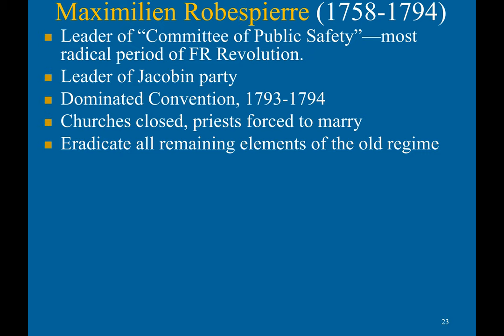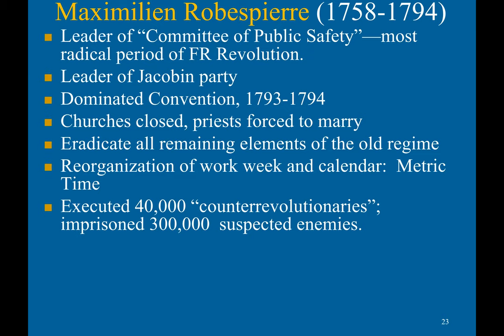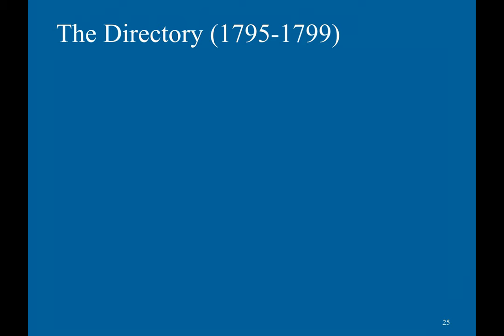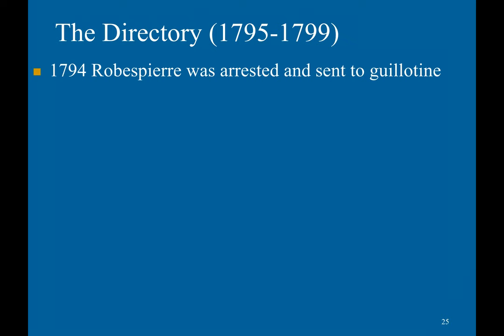His radicals eradicated all remaining elements of the old regime. They reorganized the work week and calendar to metric time, executed 40,000 counterrevolutionaries, and imprisoned 400,000 suspected enemies. He promoted the cult of reason as a secular alternative to Christianity — basically a fanatical obsession with secularism and reason. Eventually this radical period leads to a reactionary movement. In 1794, Robespierre is arrested and sent to the guillotine — this is an example of the revolution eating its own children.